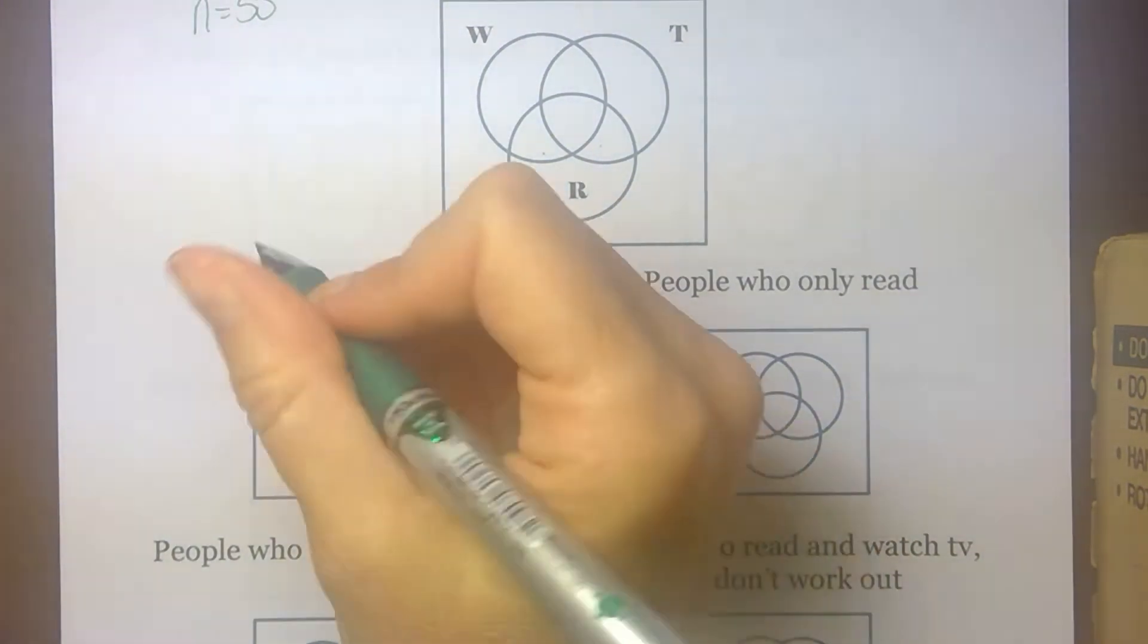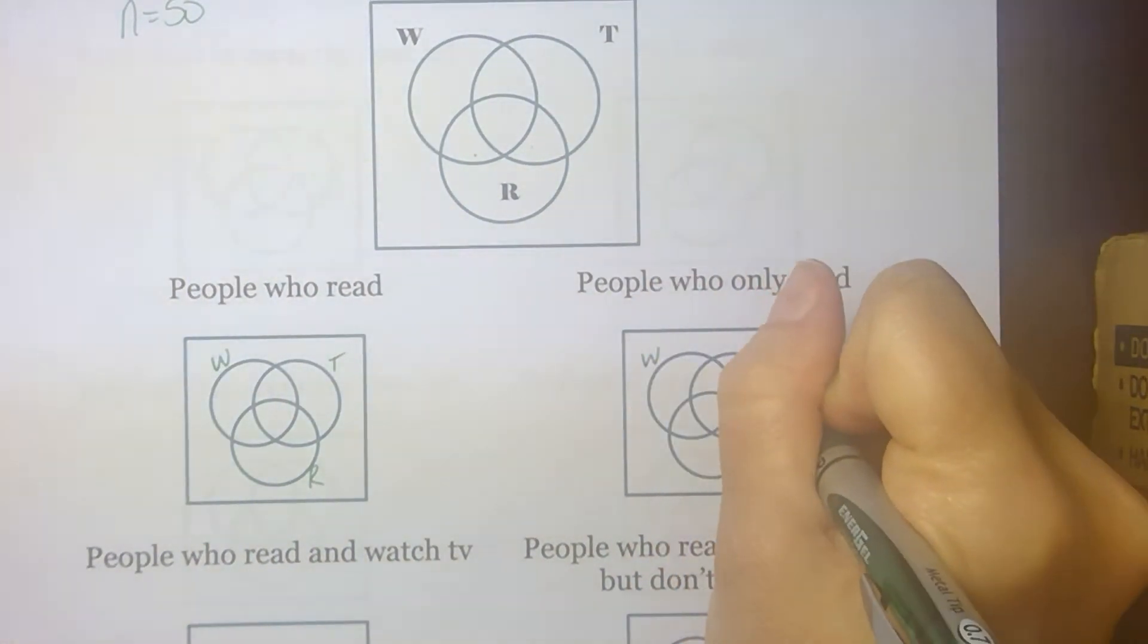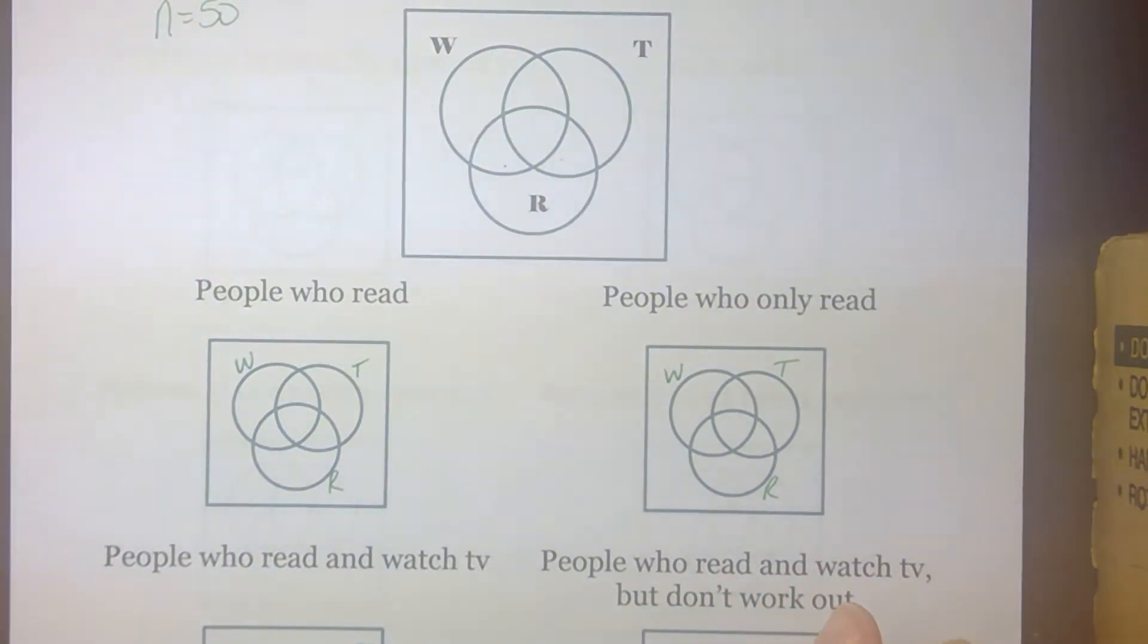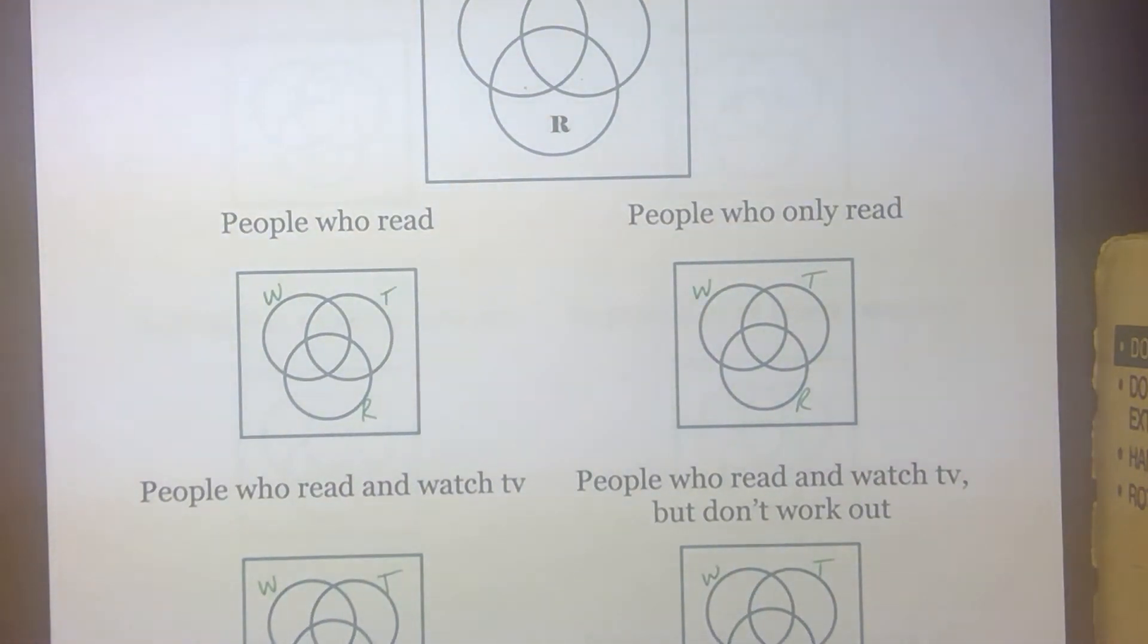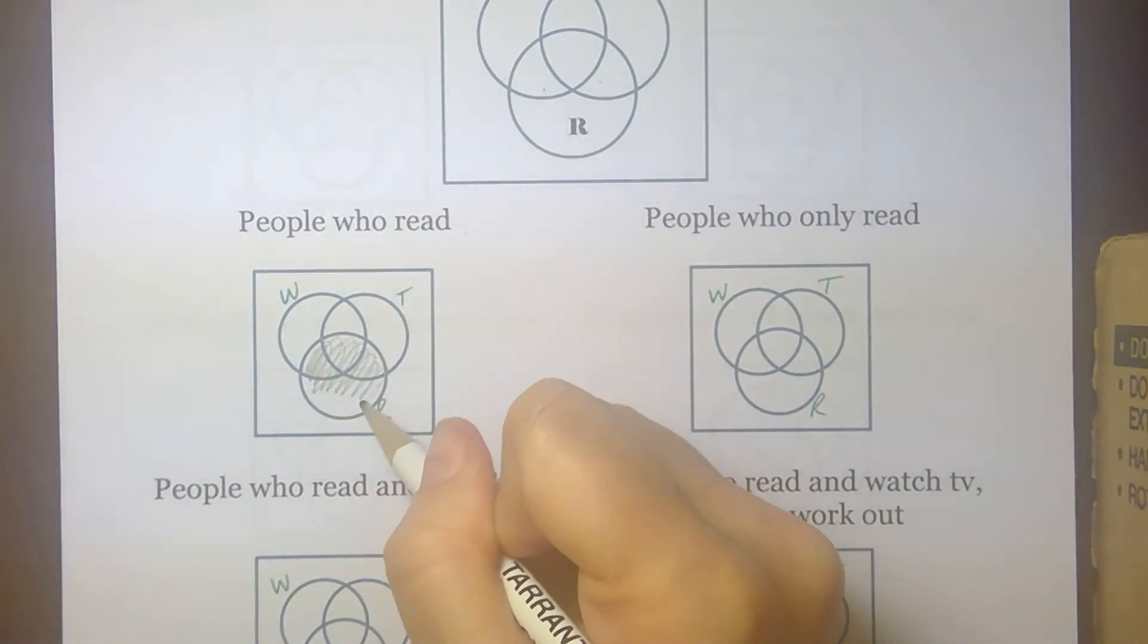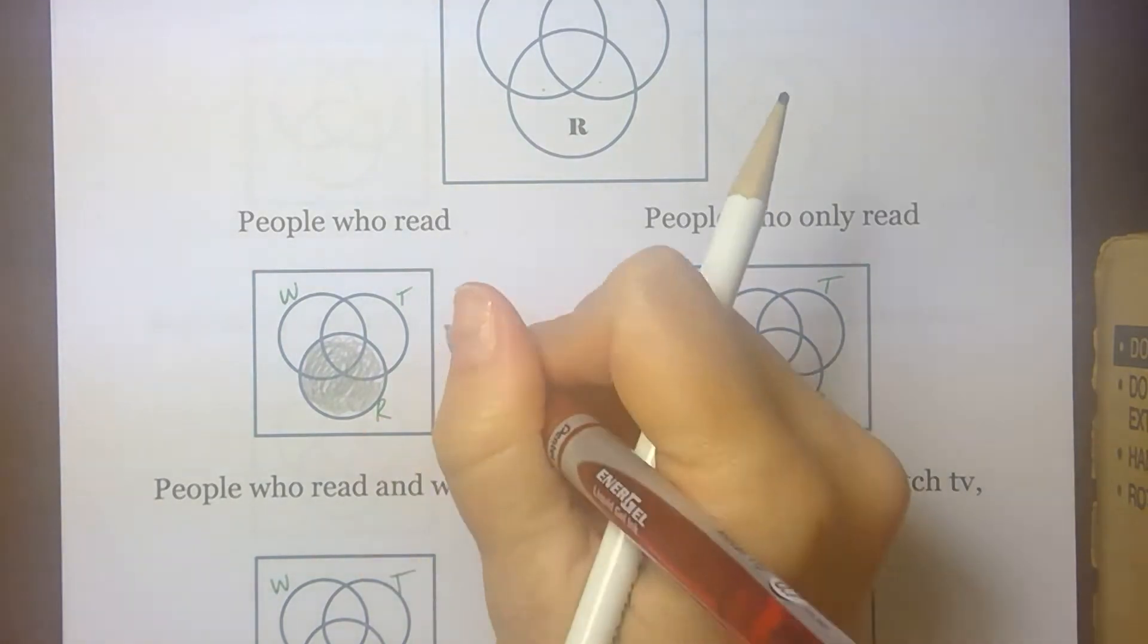People who read. Well, let's start by labeling our loops for workout, TV, and read. To make sure that we have our Venn diagrams labeled so that we're all the same. If you're choosing not to print, if you're just writing these down, make sure that you're taking the time to put the box around your Venn diagram to represent the universal set. So people who read are going to be in our R loop. We don't talk about anything else. We don't care if they do or do not do the other two things. We're just interested in do they read. Well, that's my R.